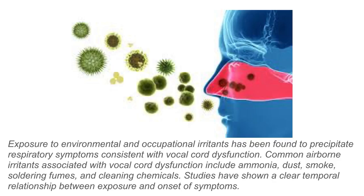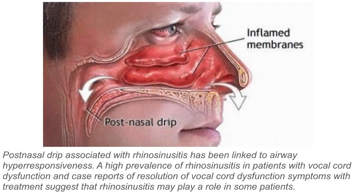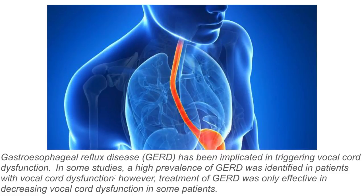Studies have shown a clear temporal relationship between exposure and the onset of symptoms. Post-nasal drip associated with rhinosinusitis has been linked to airway hyperresponsiveness. A high prevalence of rhinosinusitis in patients with vocal cord dysfunction, and case reports of resolution of symptoms with treatment, suggest that rhinosinusitis may play a role in some patients. In some studies, a high prevalence of GERD was identified in patients with vocal cord dysfunction; however, treatment of GERD was only effective in decreasing vocal cord dysfunction in some of these patients.